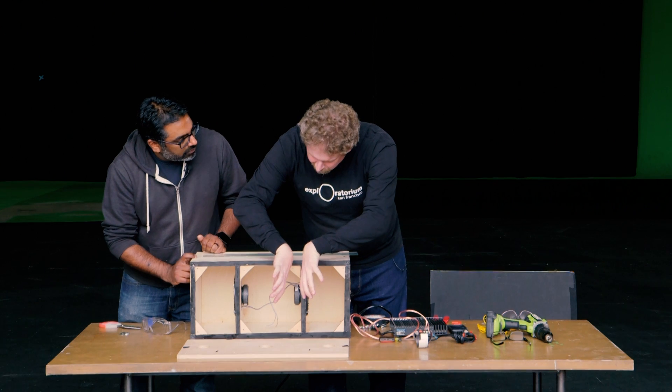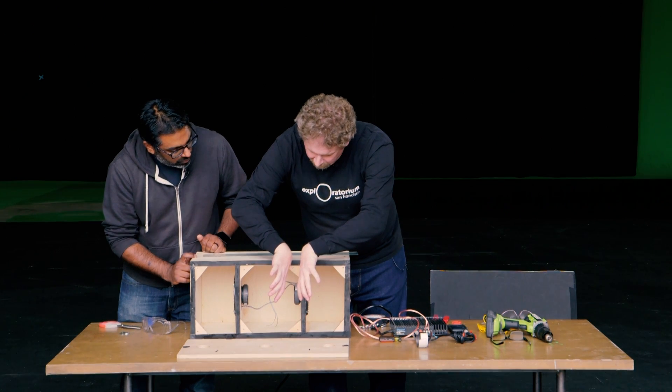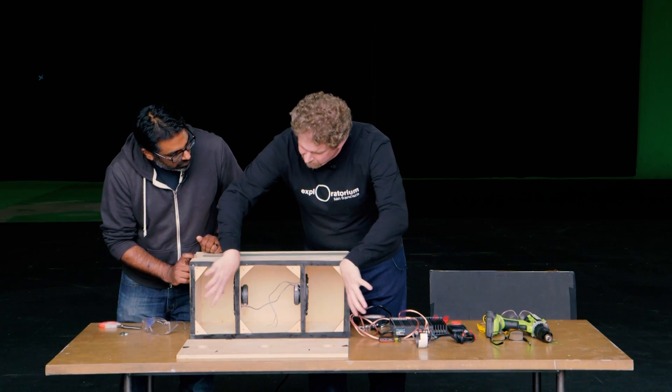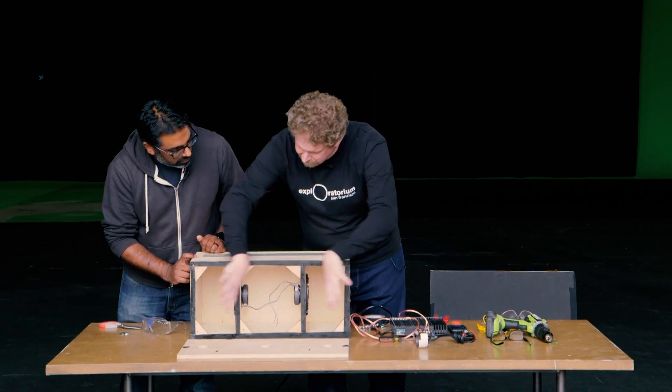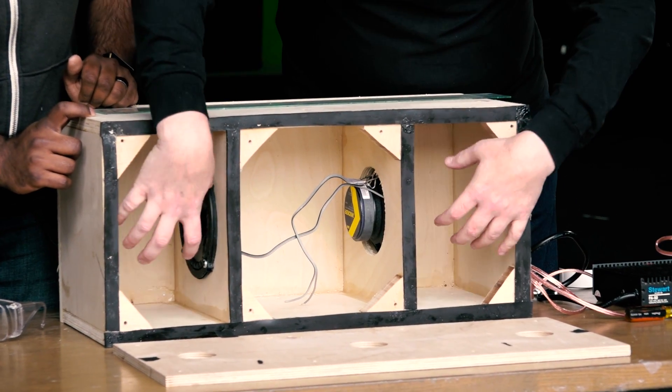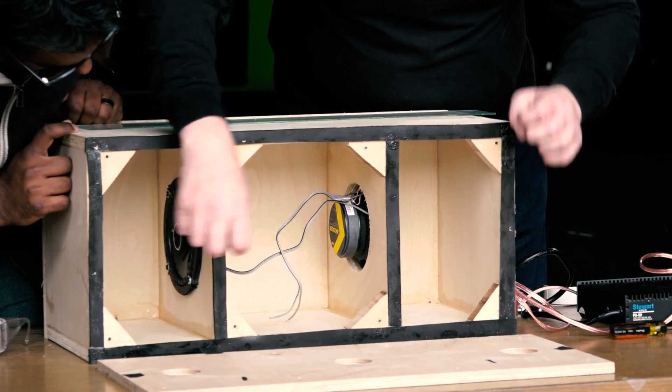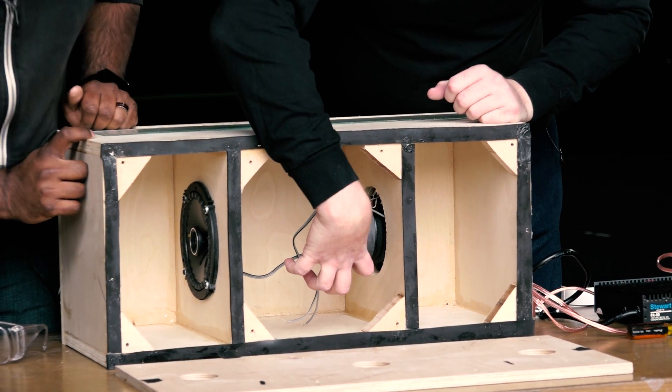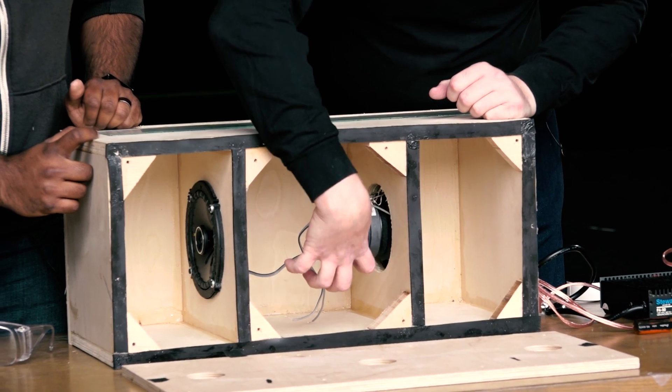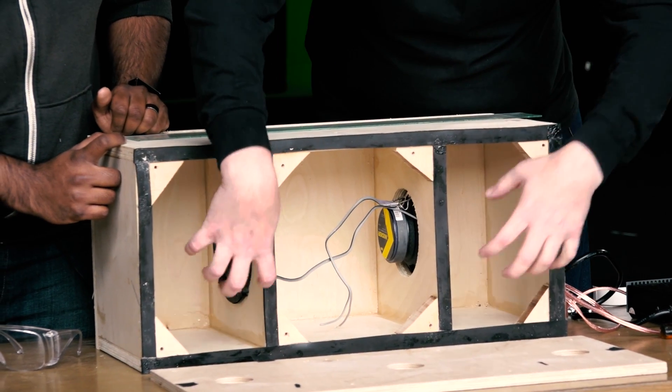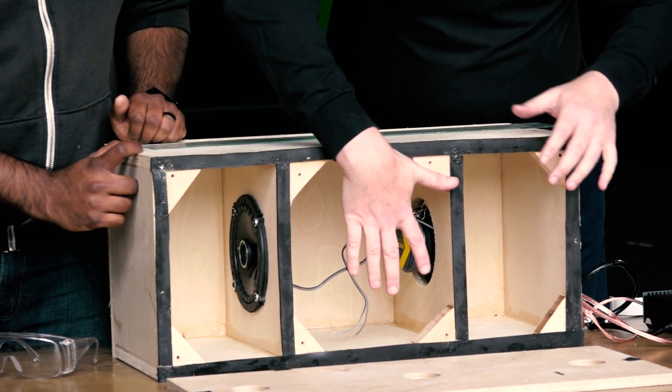What happens is we're gonna wire them so that they both fire in phase. They both go like this, and that's gonna pump air into this chamber. So the pressure in here is gonna get higher and at the same time the pressure in there is gonna get lower. And then the reverse is gonna happen. So we'll be pumping air in and out of the box at a specific frequency of sound.